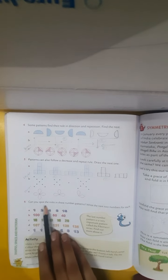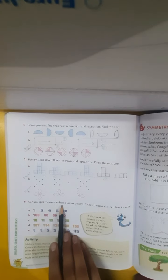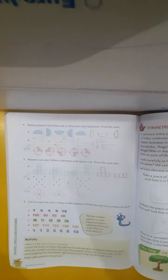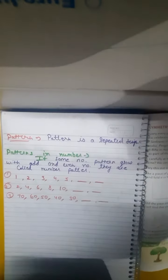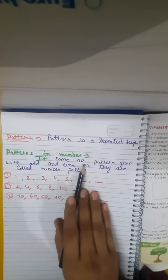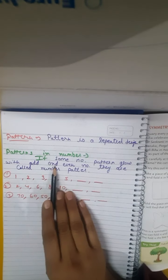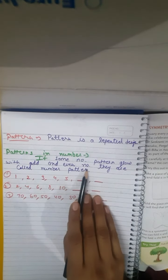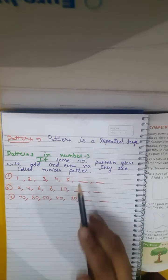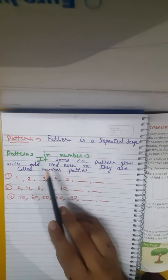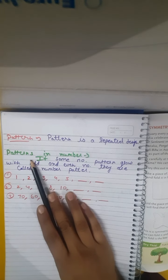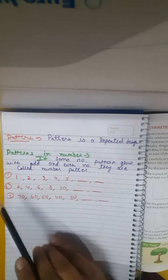Can you spot the rules in these number patterns? Write the next 2 numbers for each. Patterns in numbers: if some number patterns grow with odd and even numbers, they are called number patterns.